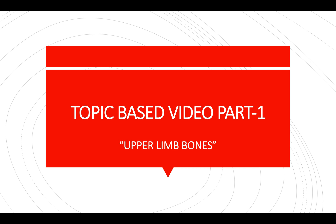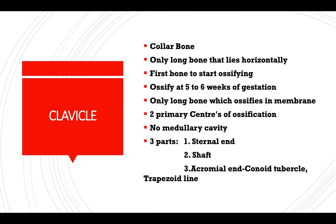Topic: upper limb bones. Clavicle, also known as the collar bone. It is the only long bone that lies horizontally. It is the first bone to start ossifying, beginning at 5-6 weeks of gestation. It is the only long bone which ossifies in membrane, and has two primary centers of ossification.